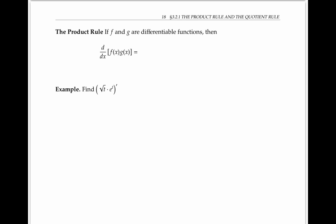The product rule says that if f and g are differentiable functions, then the derivative of the product f(x) times g(x) is equal to f(x) times the derivative of g(x), plus the derivative of f(x) times g(x). In other words, to take the derivative of a product, we take the first function times the derivative of the second, plus the derivative of the first times the second.